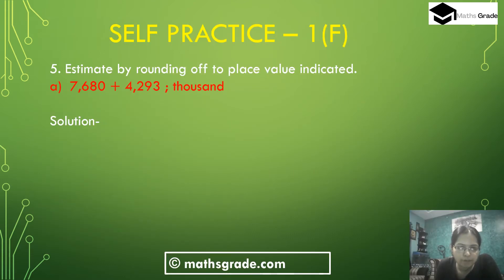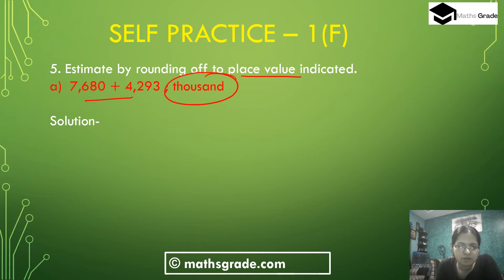Question number 5, part A: estimate by rounding up to the place value indicated. We have 7,680 plus 4,293, and the place value indicated is thousands. We have to round both numbers to the nearest thousand.